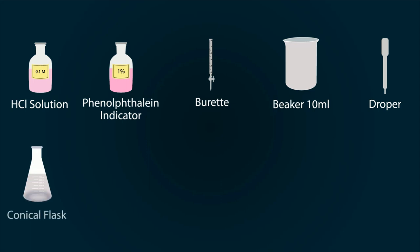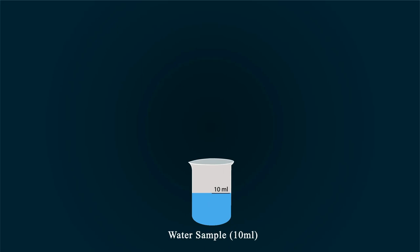First of all, take 10 milliliter water in a beaker. You can take water sample from your tap or from your laboratory. Now start adding 1% phenolphthalein solution into the water sample. You can add phenolphthalein with the help of a dropper.